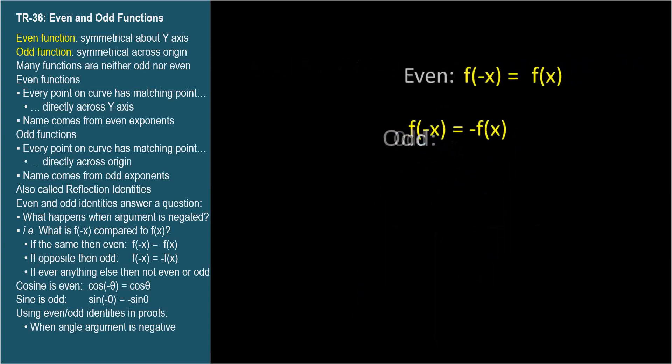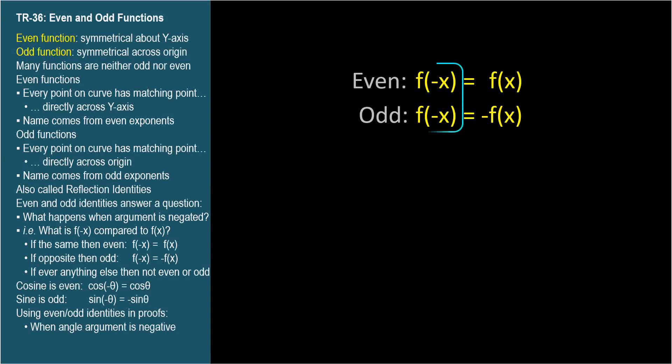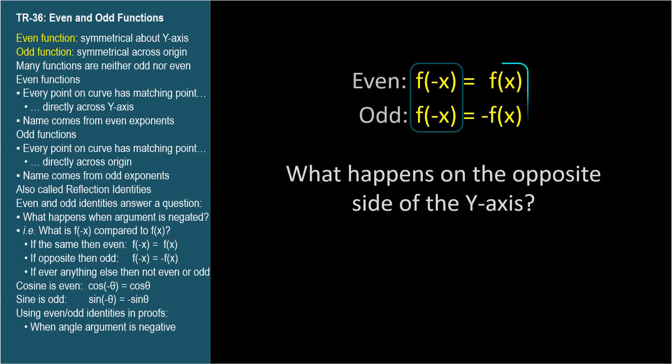Let's take one more look at these identities. They're identities because they're always true, at least for even and odd functions, regardless of the value of x. This side asks the question, what happens on the opposite side of the y-axis? And this side answers the question, same value or opposite value? Even function or odd function?